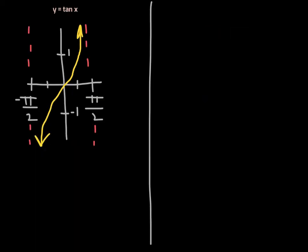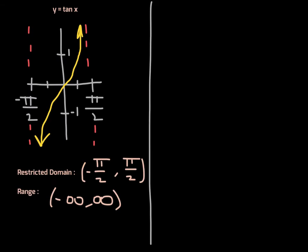Moving on to tangent of x: if we restrict the domain for tangent to be just between negative π/2 and positive π/2, we have a graph that passes the horizontal line test, making it one-to-one with an inverse function. The range is all real numbers. Note the parentheses on the endpoints of this interval — that's where the vertical asymptotes are located.